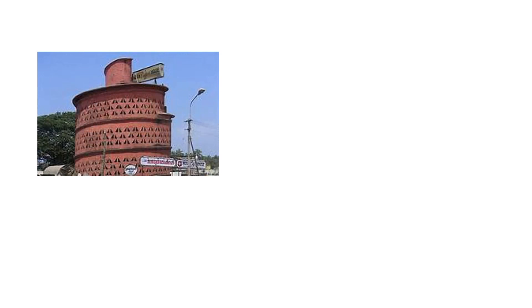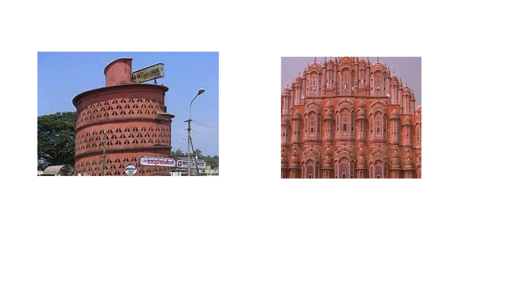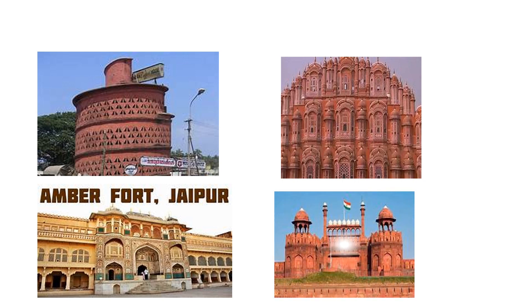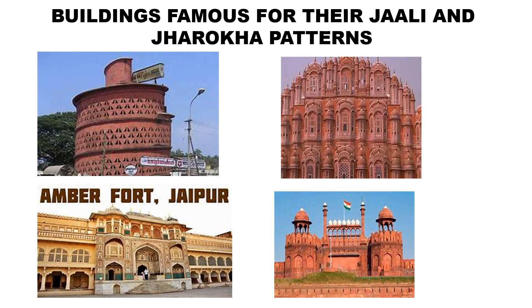Have you seen this building? This is the Indian Coffee House building in Trivandrum, famous for its Jali patterns. Hawa Mahal in Rajasthan is famous for Jali and Jharoka patterns. Amber Fort Jaipur and Red Fort Delhi are also famous for Jali and Jharoka patterns. These are the buildings famous for their Jali and Jharoka patterns.